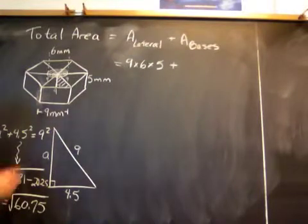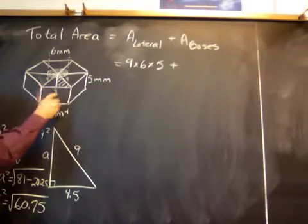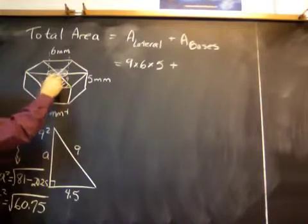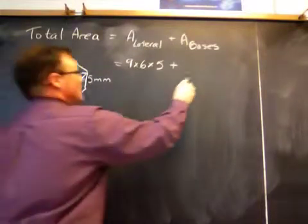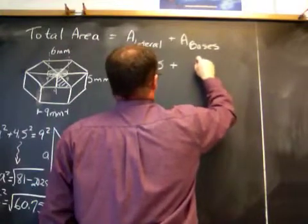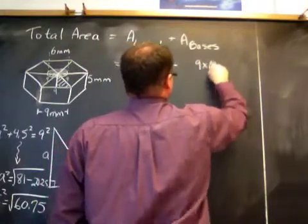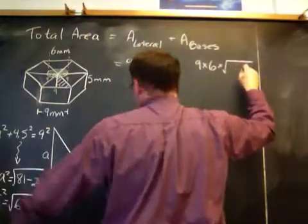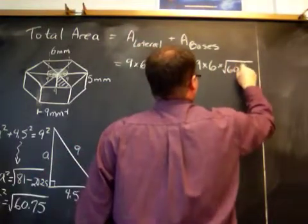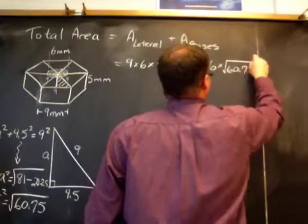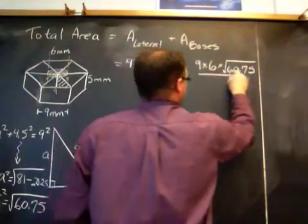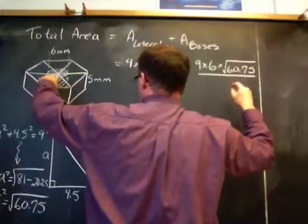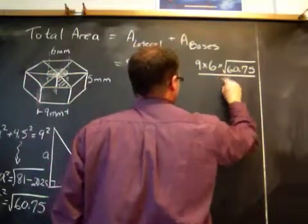So what do we have now? I have the length of the apothem, and that's going to be used in their formula, perimeter times the apothem divided by 2. So that's going to be perimeter, 9 times 6, times the apothem, which I'll still write in as 60.75. And that's got to be divided by 2. Why? Again, because there's the part of the triangle that's going to be dividing it by 2.